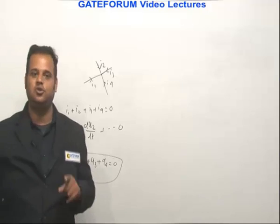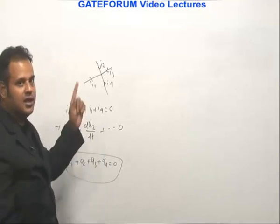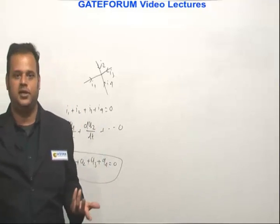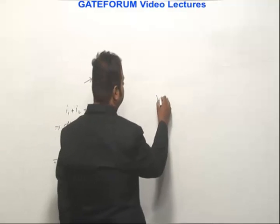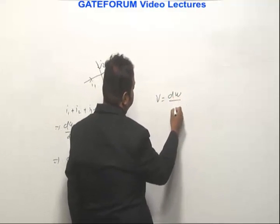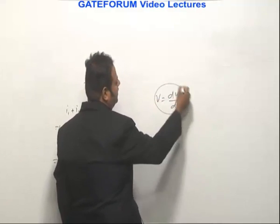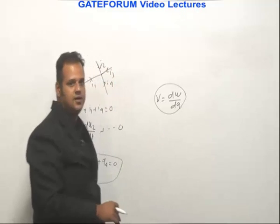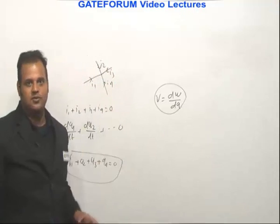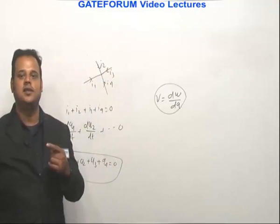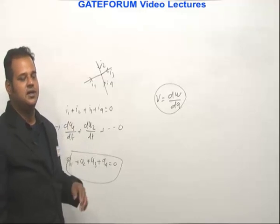Coming to conservation of energy, it should be KVL because in KVL we add voltages, and voltage is related to energy by V equals dW/dQ, where W is energy. In that case you get the conservation equation W1 plus W2 plus W3 equals 0. So in KVL it is conservation of energy.